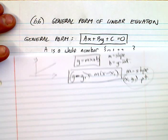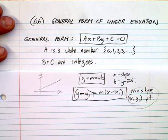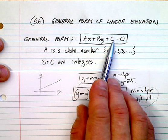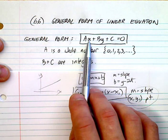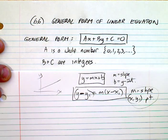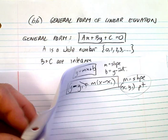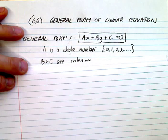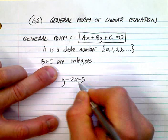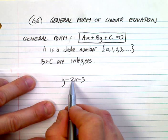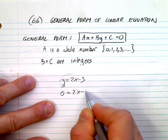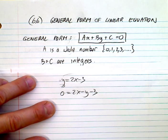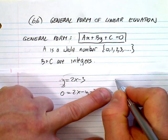In general form, there are some constraints on the coefficients. 'A' must be a positive whole number — so we always start with a positive x term. 'B' and 'C' are just integers, meaning no fractions allowed. For example, if you have y equals 2x minus 3, you can see the x term is already positive, so bring everything over: 2x minus y minus 3 equals zero — done.